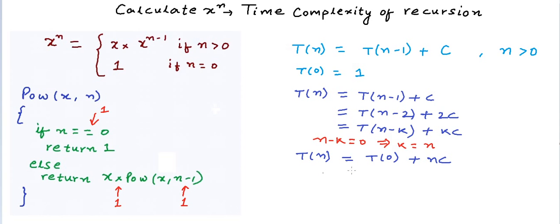So T(n) equals T(0) + n·c, where c is a constant. T(0) is one, so this is n·c + 1 overall. Clearly, the time taken is proportional to n, and this is O(n) — order of n — in terms of time complexity.